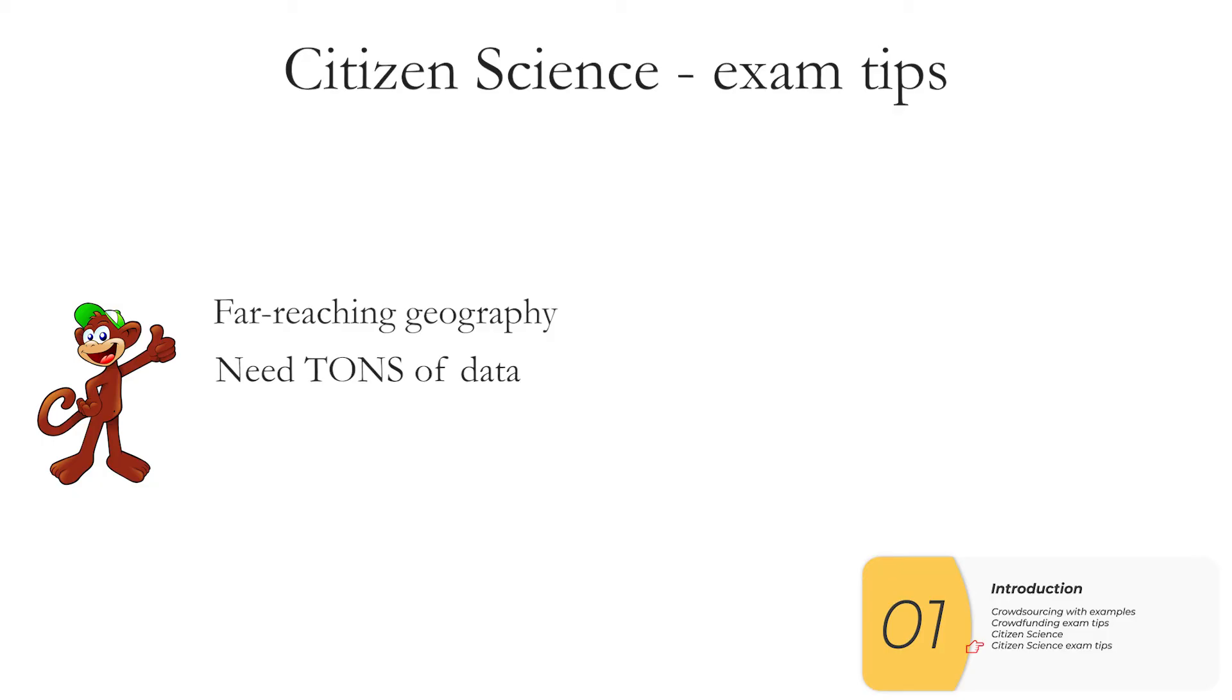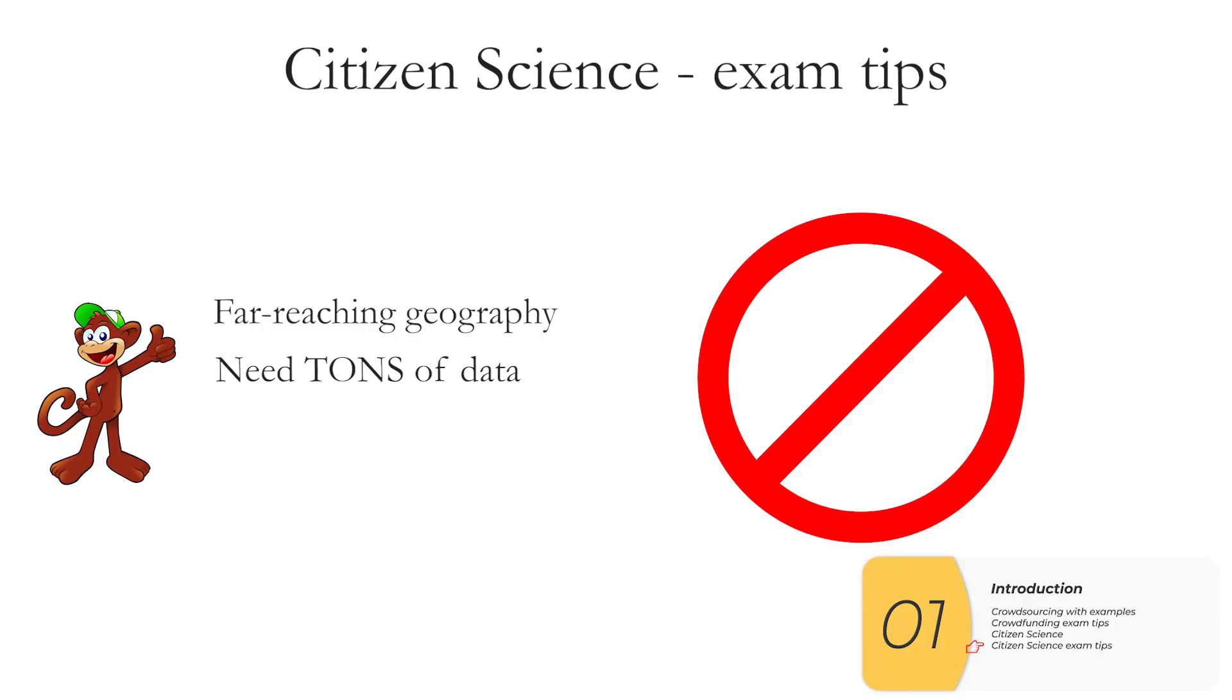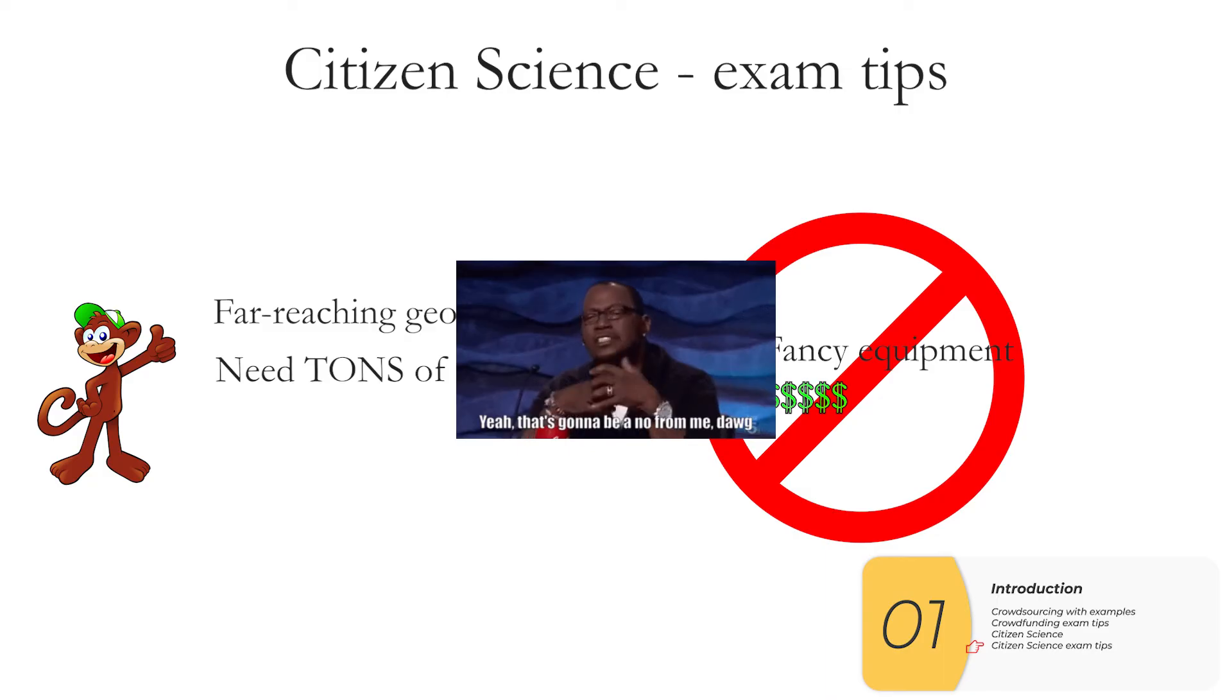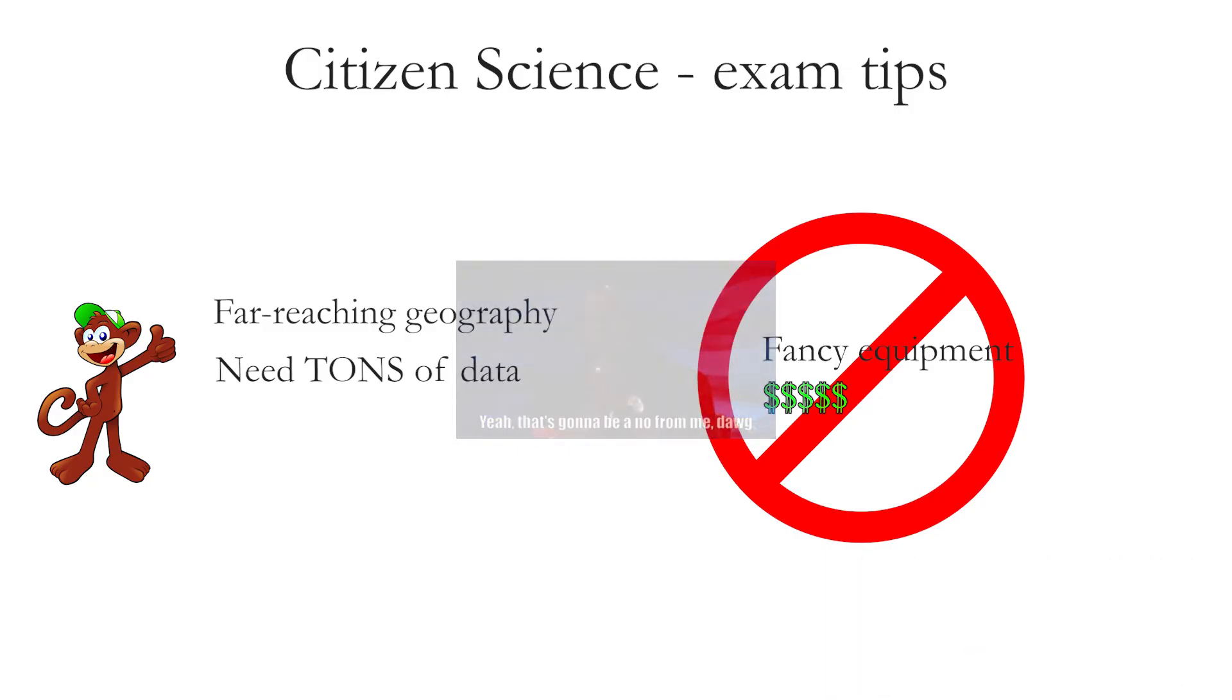At the same time, there are certain conditions where it's really, really bad idea to use citizen science. So anytime I have high skill required, fancy equipment, a lot of money, these are all bad conditions for citizen science. So if I'm asking normal, regular people to analyze data, to use ultrasound, or work in a fancy lab to go buy stuff, that's going to be a hard no for citizen science. When you're taking the AP CSP exam, you'll want to keep these factors in mind.